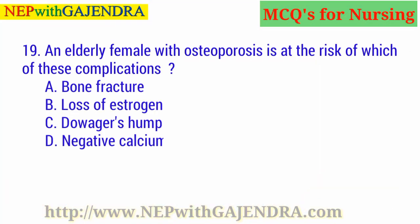An elderly female with osteoporosis is at risk of which of these complications? A. Bone fracture. B. Loss of estrogen. C. Dowager's Hump. D. Negative calcium balance. The right answer is A: Bone fracture.